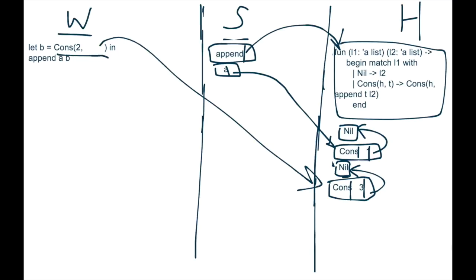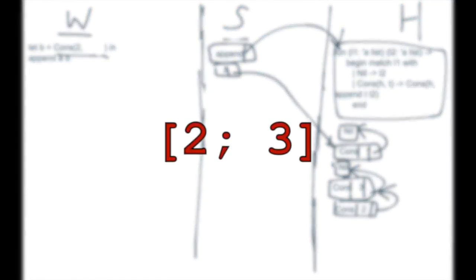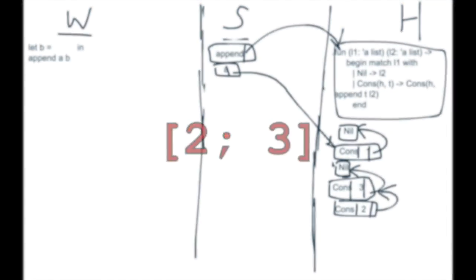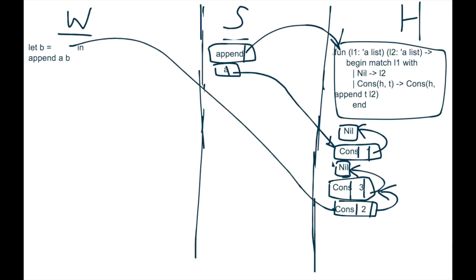Now we can allocate this cons cell. So we have cons 2. And then the second argument is where is it going? We look on the workspace and we follow the arrow, and we see that it's just going to that cons cell above it. And this represents the list 2, 3 on the heap. Now we can point to it from the workspace.